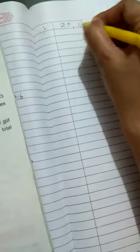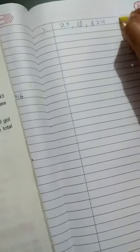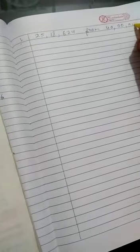2, 5, 1, 8, 6, 2, 4. This you have to subtract from what? 4, 0, 0, 0, 0, 0, 0. So you will subtract this. You need to subtract what? This you have to subtract from this.